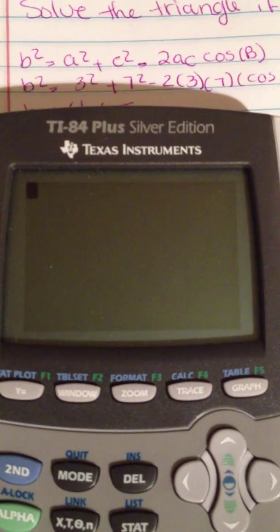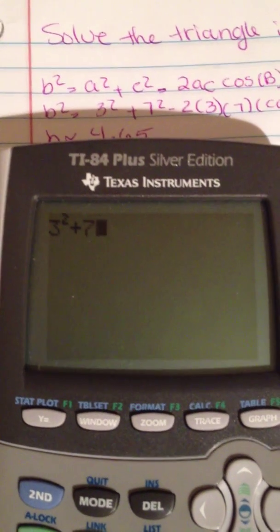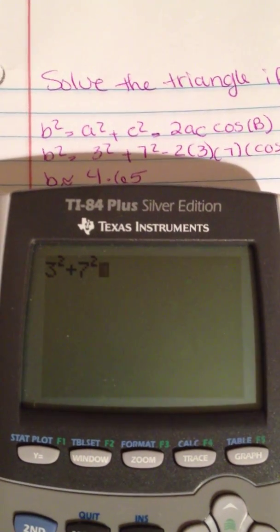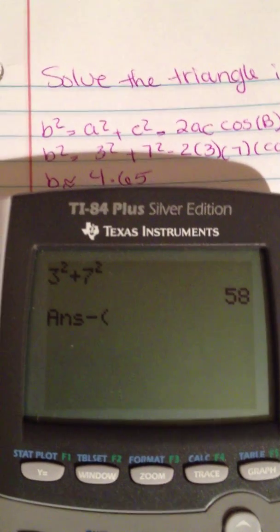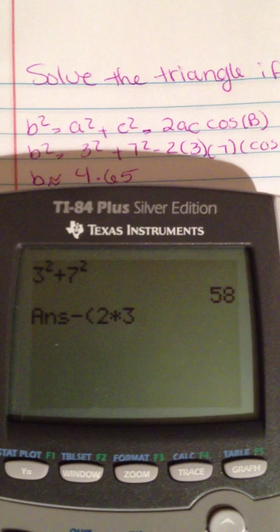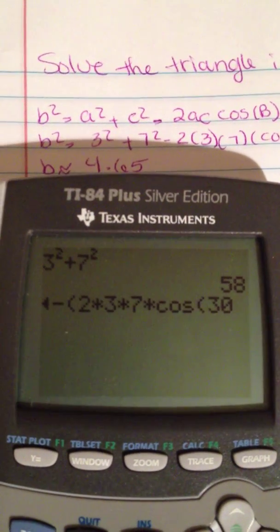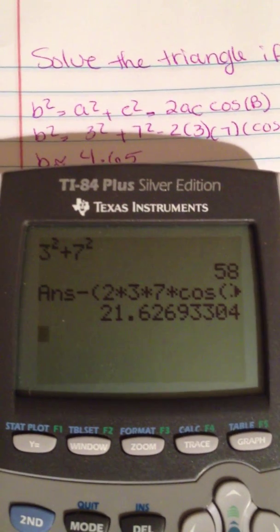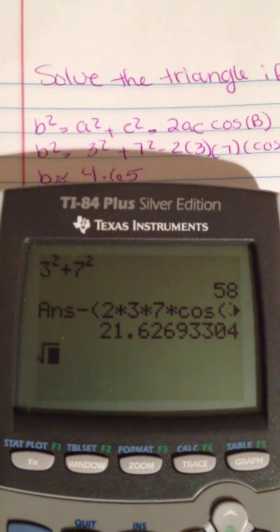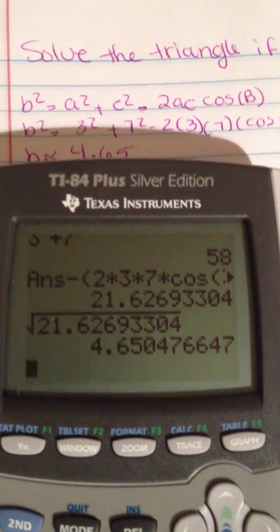I'll use the calculator to find my answer. 3² + 7² minus 2 times 3 times 7 times cosine of 30. This is the b² answer. So I'll do the square root of the answer, which is about 4.65.